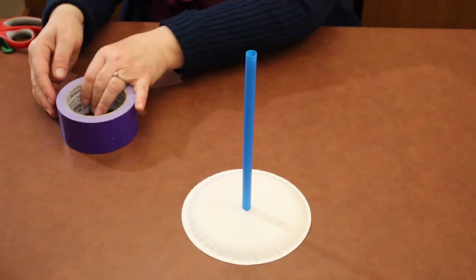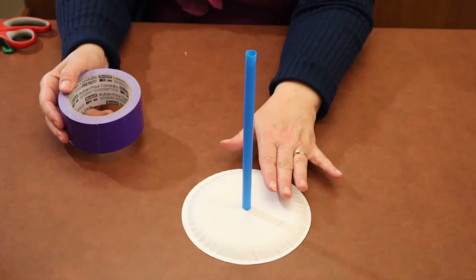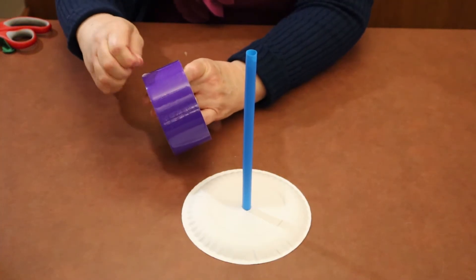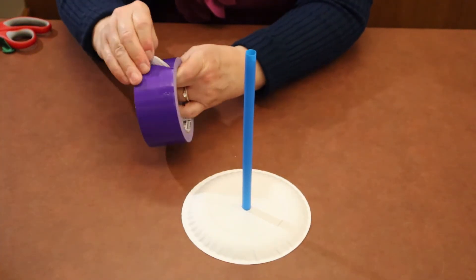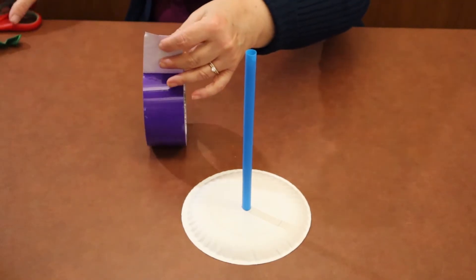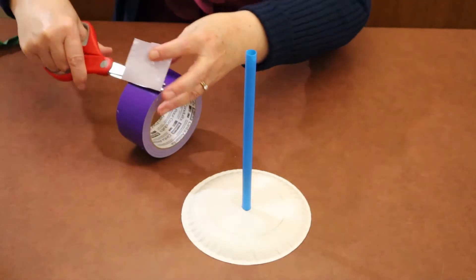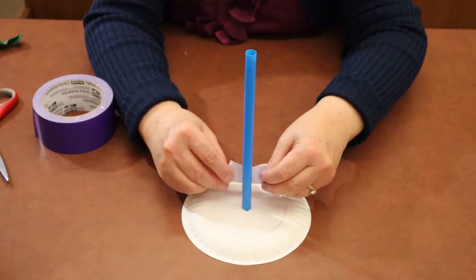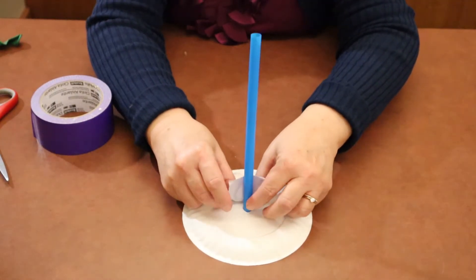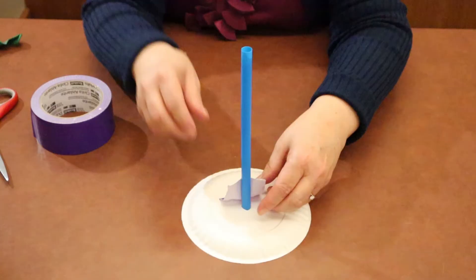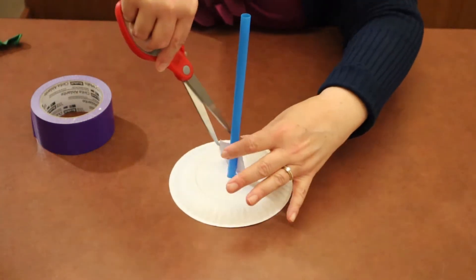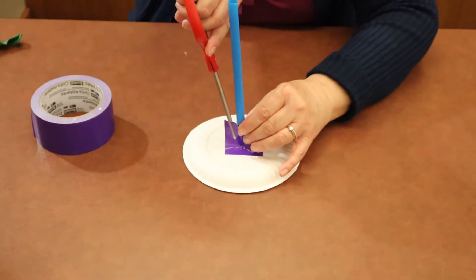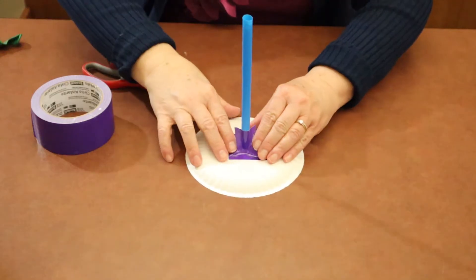The next step in our project is to attach the straw to the plate with our duct tape. Take your duct tape and scissors and start with some smaller pieces. Put it on the plate and the straw, and if you need to, you can even cut the duct tape a little bit so that it wraps around the straw a little bit better.